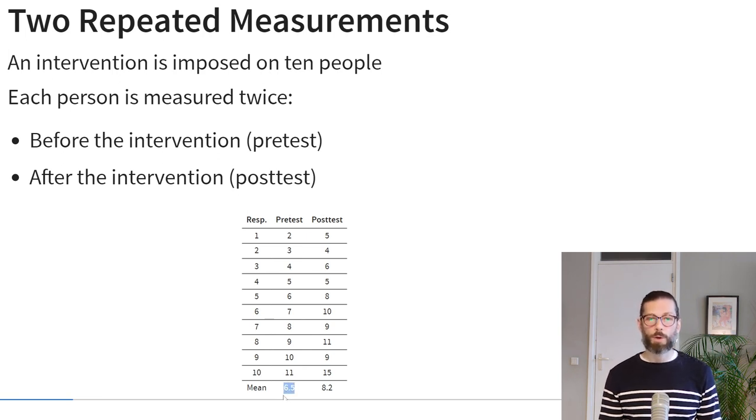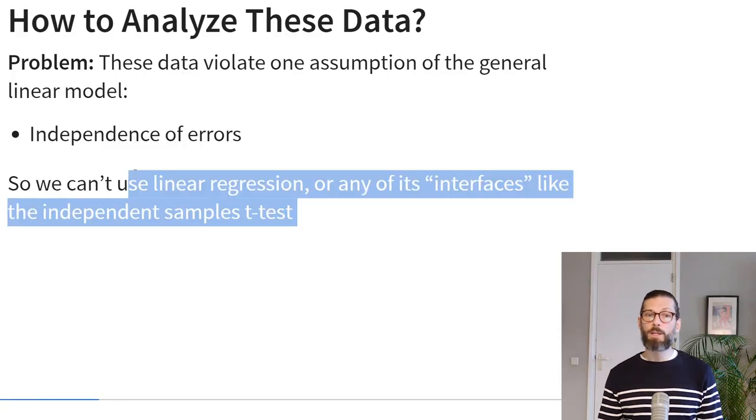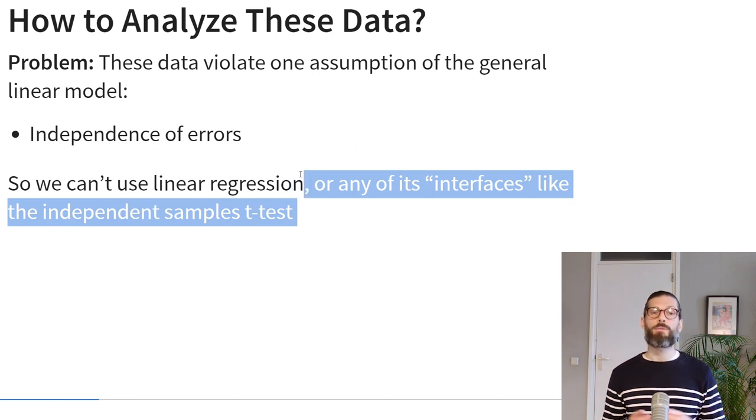We can calculate the mean for both time points: the mean pretest score was 6.5 and the mean posttest score was 8.5. However, these data violate the assumption of independence of errors in the general linear model, because one participant gives us two data points and the errors of those two data points will be correlated — the same factors are likely to influence the error term for the same person. So we can't use linear regression or an independent samples t-test. Instead, we use what is called a paired samples t-test.